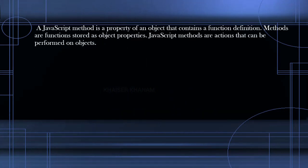In JavaScript, methods are nothing but whenever we are creating an object and inside the property when we are storing one function, that function becomes a method. A JavaScript method is a property of an object that contains a function definition. Methods are functions stored as object properties, and JavaScript methods are actions that can be performed on objects. Maybe this definition is a little confusing — I will show you an example so you understand it clearly.